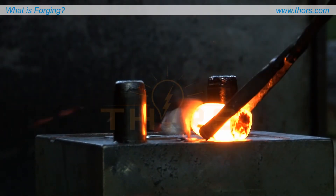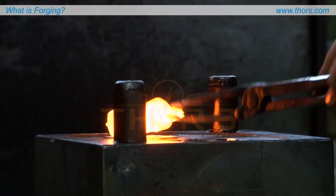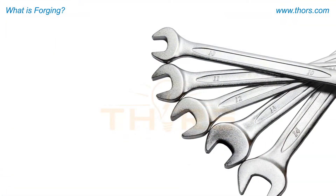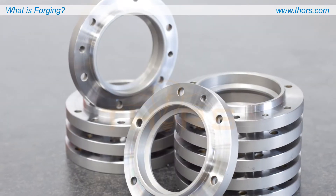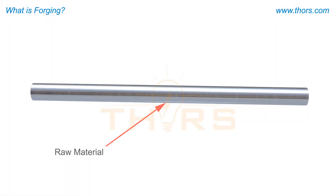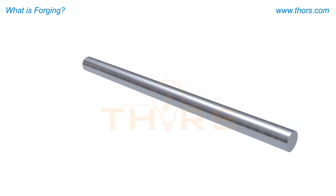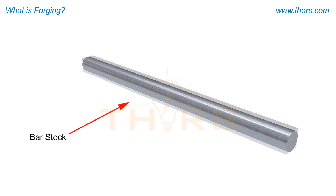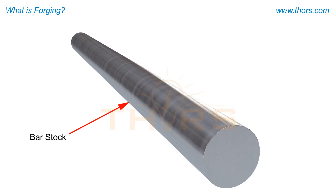Modern forging processes are responsible for manufacturing everything from hand tools to automotive and machine parts. The raw material used for forgings is produced and delivered in the form of bar stock, usually in random lengths up to 6 meters or 20 feet. Bar stock may be circular or square with rounded corners.